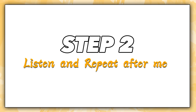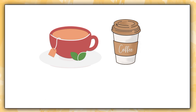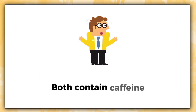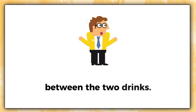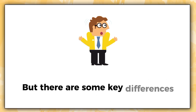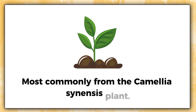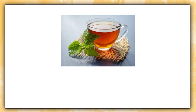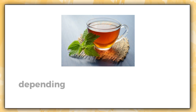Step 2. Listen and repeat after me. Tea and coffee are two of the most popular beverages consumed around the world. Both contain caffeine and therefore can provide an energy boost, but there are some key differences between the two drinks. Tea is made by steeping leaves, most commonly from the Camellia sinensis plant. The caffeine content in tea can range from about 15 to 70 mg per 8 oz cup depending on the type and brewing time.